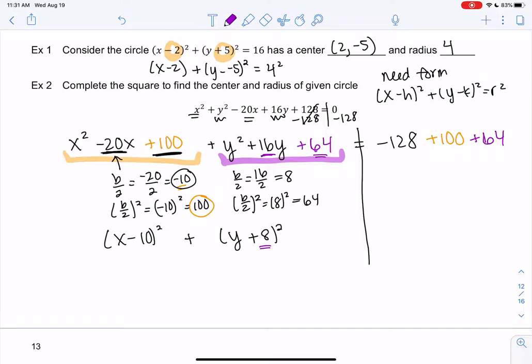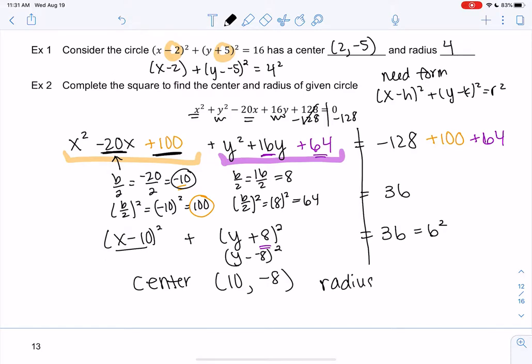And then if I simplify the other side, I get 36 on the right side, which is 6 squared. So my center will be 10, x minus 10. And then y plus 8 would be y minus negative 8, because it was a subtraction. And my radius will be 6 because 6 squared is 36. So if you want more practice with completing the square, I'll throw that in the Khan Academy review.